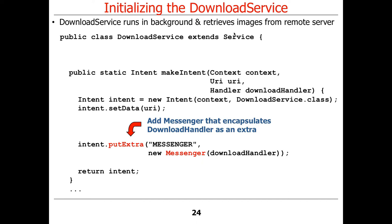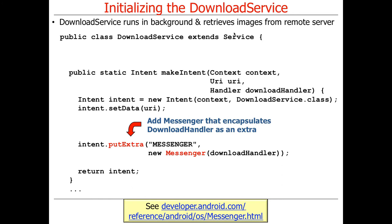Student question: why is the context important and why can't we pass any context? Context is important because of the way you need to create intents. The question of what context means is a deep one — it really has to do with whose permissions are going to be considered when deciding what operations this particular thing can do. For simple applications like this it doesn't matter much, but for more complicated applications it makes a big difference because it has to do with security, privileges, and so on.